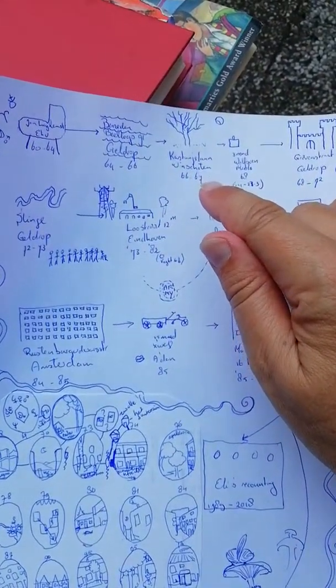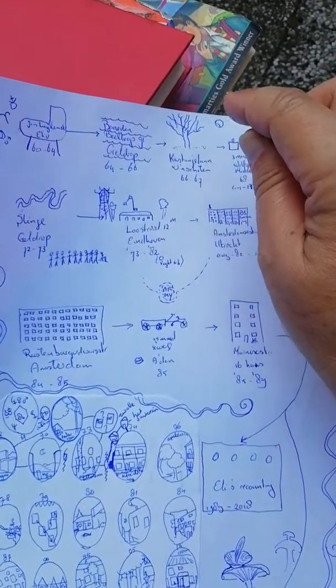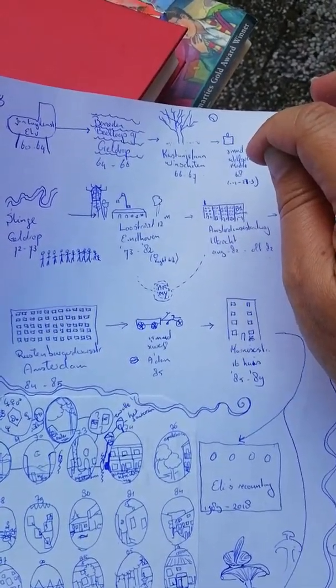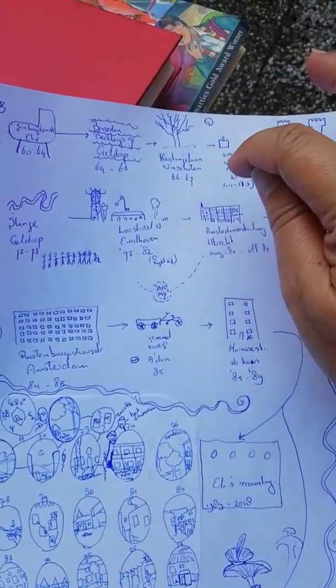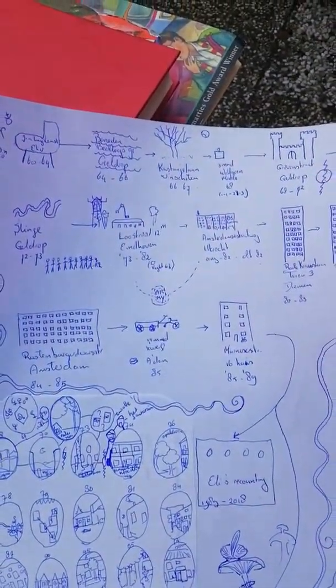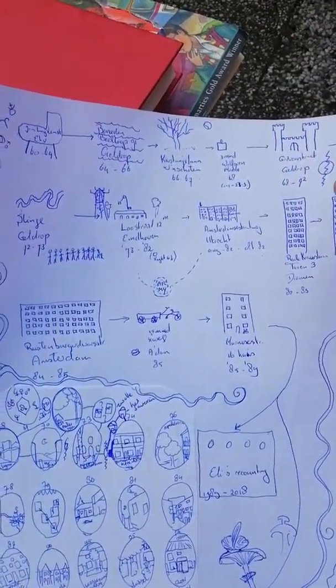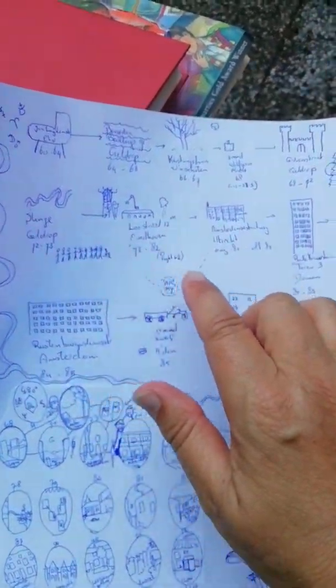They moved at some point for a small period of, I think, two years, it says here, to the north of the country, to Groningen. So that's his big expedition to the north, right? And then they came back to this part of the world again.